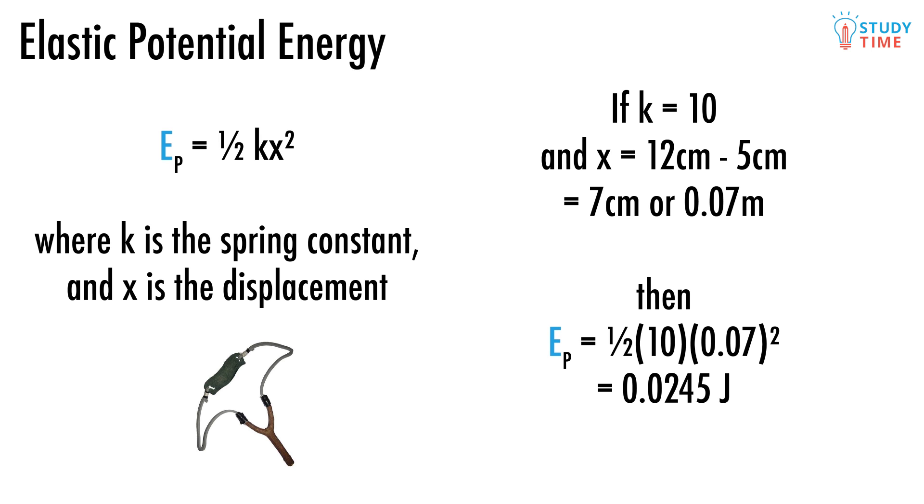Then we just chuck the numbers into the equation. Ep equals half times 10 times 0.07 squared, which is 0.0245 joules. That's not much energy, is it?